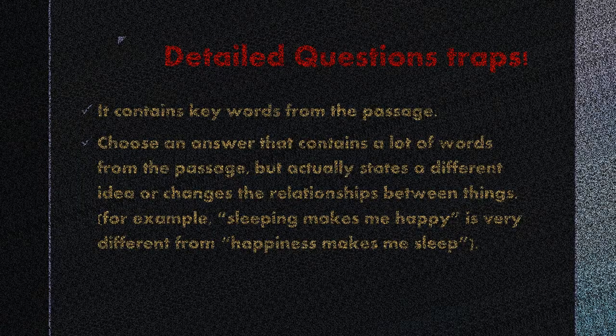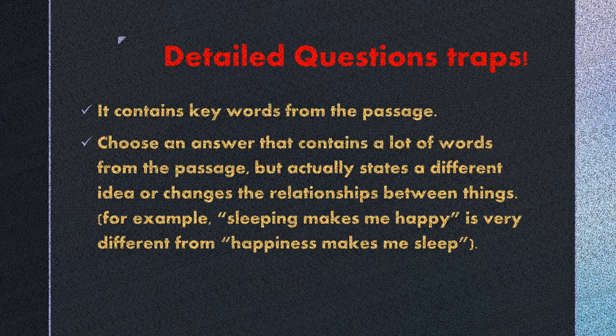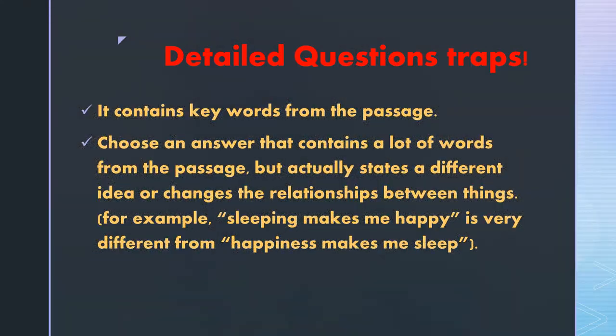There are two major traps that people fall into on detailed questions. Both of them can be avoided if you are careful not to choose an answer simply because it contains keywords from the passage. The first trap is to choose a true statement that was contained in the passage but that doesn't answer the question.